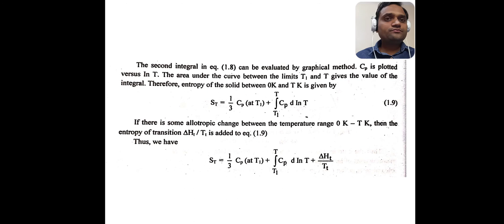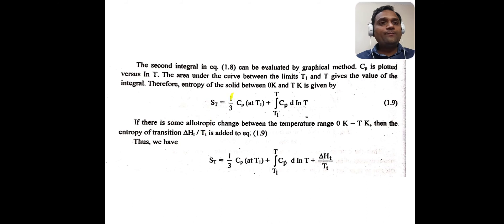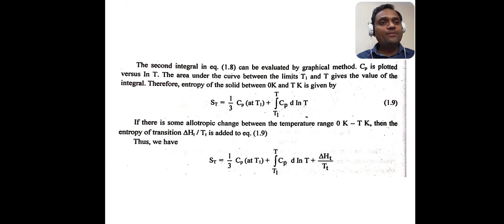The second integral can be evaluated by the graphical method — Cp is plotted versus ln T, and the area under the curve between limits T₁ and T gives the value of the integral. Therefore, entropy of the solid between 0 K and T K is: Sₜ = (1/3)Cp(T₁) + ∫ₜ₁ᵀ Cp d(ln T). If there is an allotropic change between the temperature range 0 K to T K, then the entropy of transition ΔHₜ/Tₜ is added, giving: Sₜ = (1/3)Cp(T₁) + ∫ₜ₁ᵀ Cp d(ln T) + ΔHₜ/Tₜ.